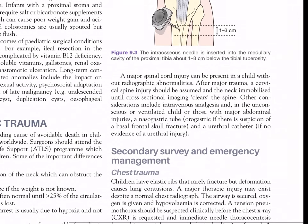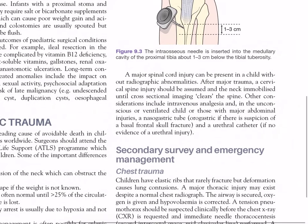A major spinal cord injury can be present in a child without radiographic abnormalities. After major trauma, a cervical spine injury should be assumed and the neck immobilized until cross-sectional imaging clears the spine. Other considerations include intravenous analgesia, and in the unconscious or ventilated child or those with major abdominal injuries: a nasogastric tube — or orogastric if there is suspicion of a basal frontal skull fracture — and a urethral catheter if there is no evidence of urethral injury.